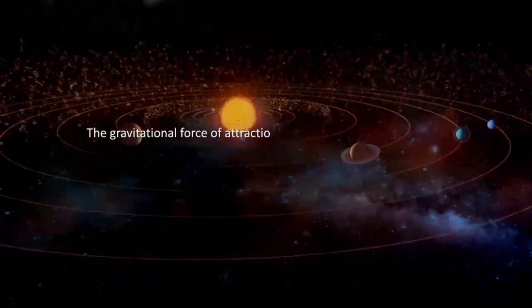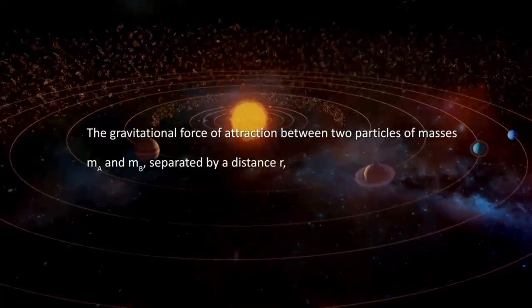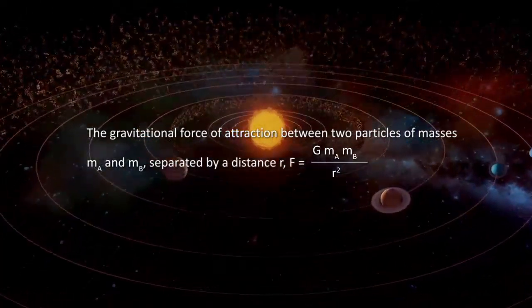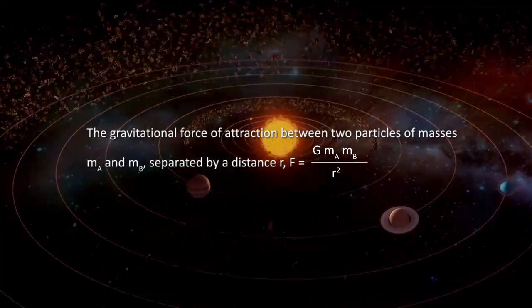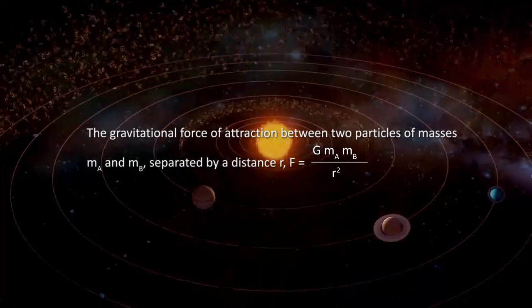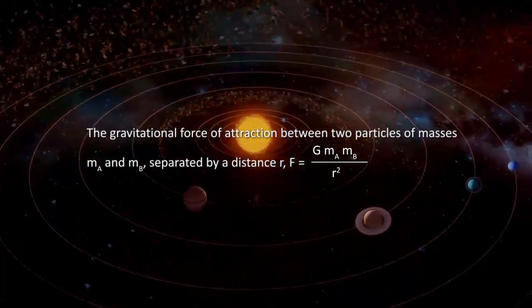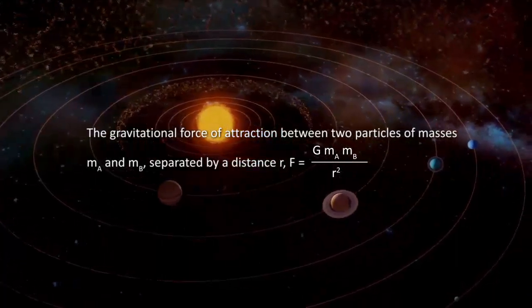The gravitational force of attraction between two particles of masses M A and M B separated by a distance R is G M A M B by R square.